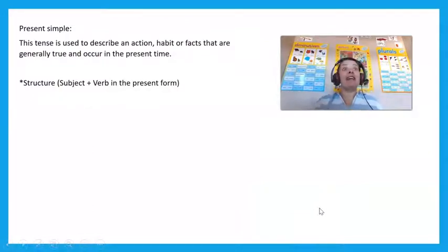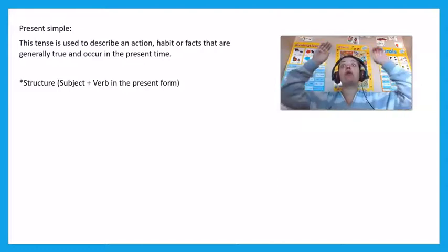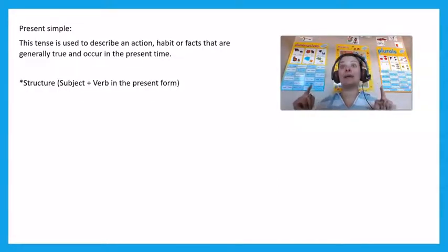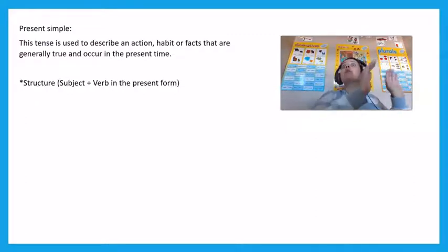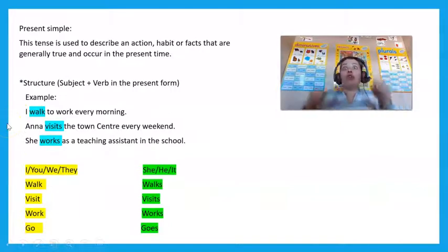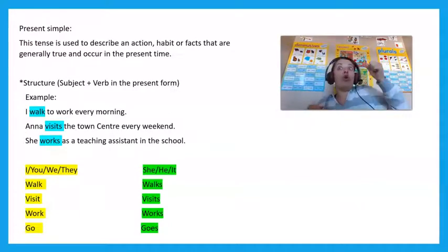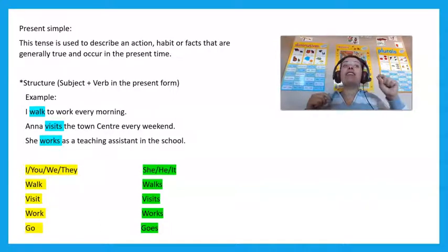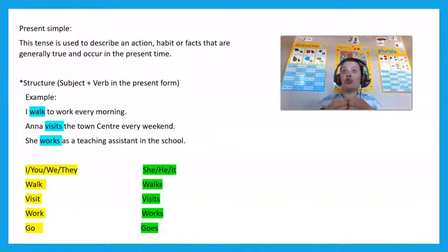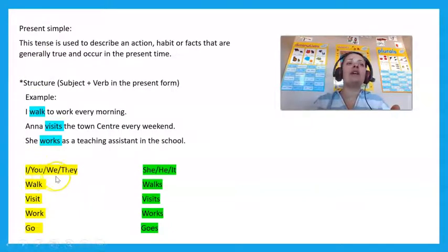So, present simple. It describes an action, habit, or fact that is generally true in the present time. For you to use the present simple tense, you will need a structure — the subject and the verb in the present form. For example: 'I walk to work every morning,' 'I walk to school every morning,' 'Anna visits the town centre every weekend,' or 'she works as a teaching assistant in the school.' So always a subject and a verb. When you use I, you, we, and they, you will always use: walk, visit, work, or go.